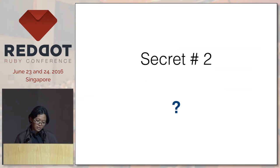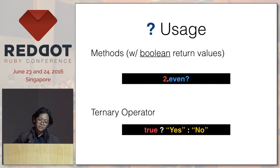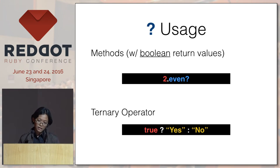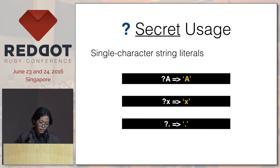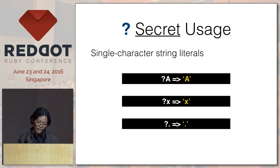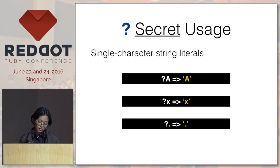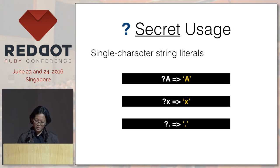The second secret is the question mark. We usually see this symbol when we use methods that return boolean values, like even? or in a ternary operator. But another usage of question mark is to define single-character string literals, like ?a instead of "a". You can even use it in symbols — like ?. is like ".". So it saves you one character. In golf code, shorter is better.